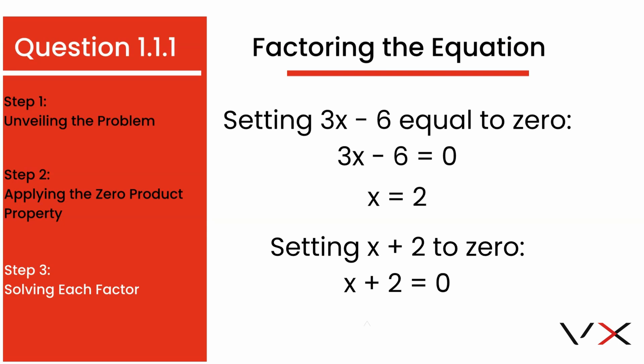Moving on to the second part, we've got x plus 2 equals to 0. To solve for x here, we'll subtract 2 from both sides. This tells us that x is negative 2. And just like that, we found both answers we were looking for.